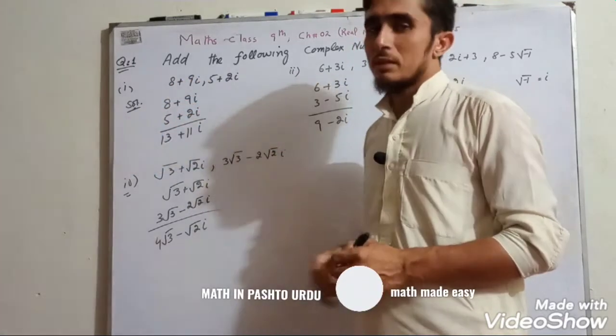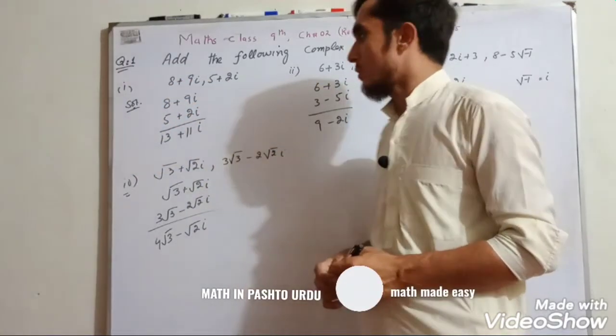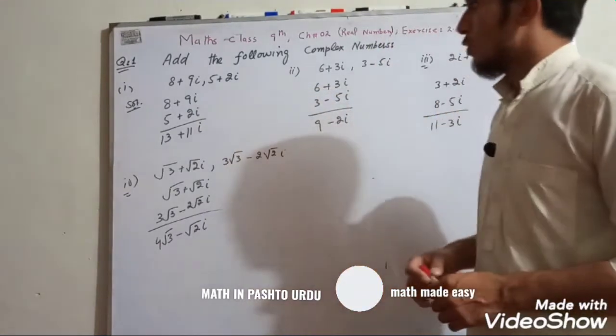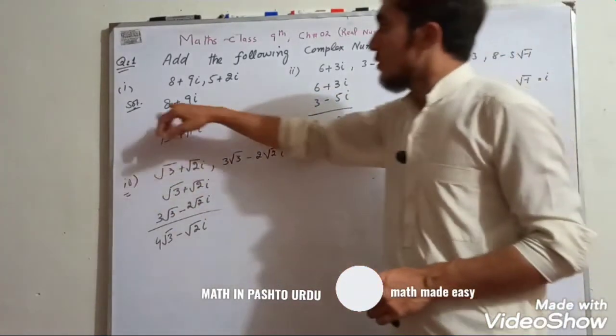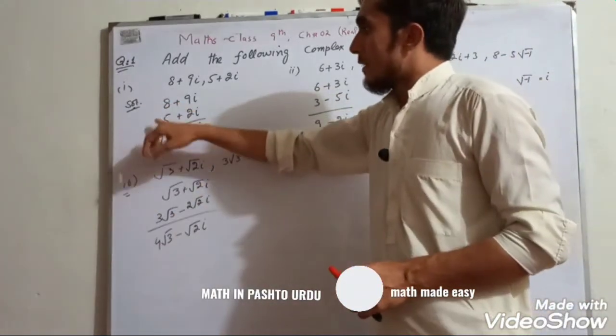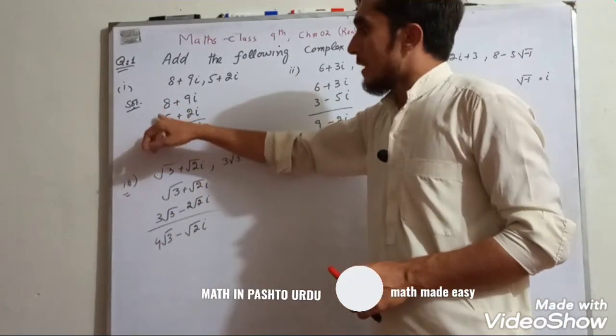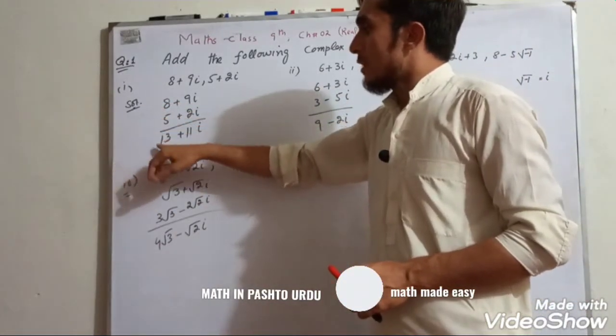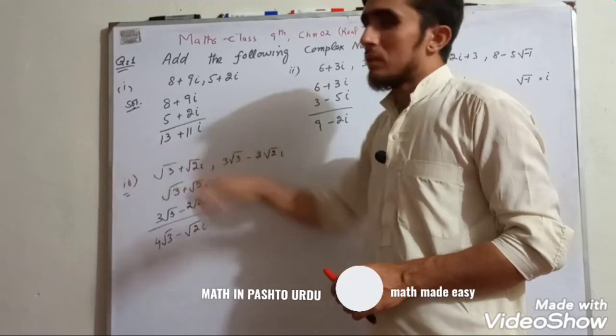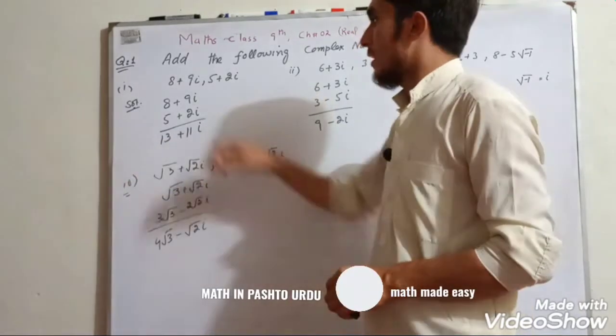5 plus 2 iota. So first we will add the answer: 9 plus 8 iota plus 5 iota equals 13 iota.